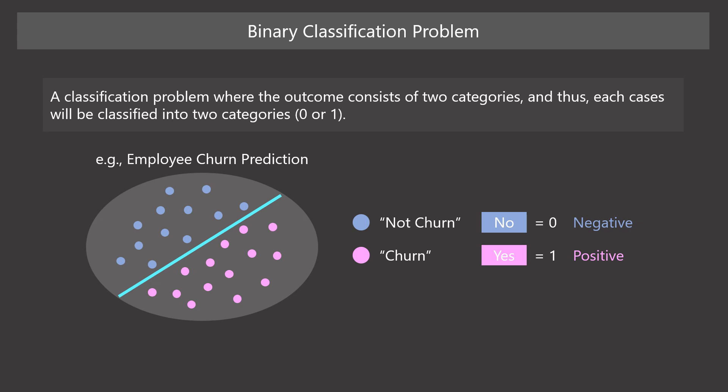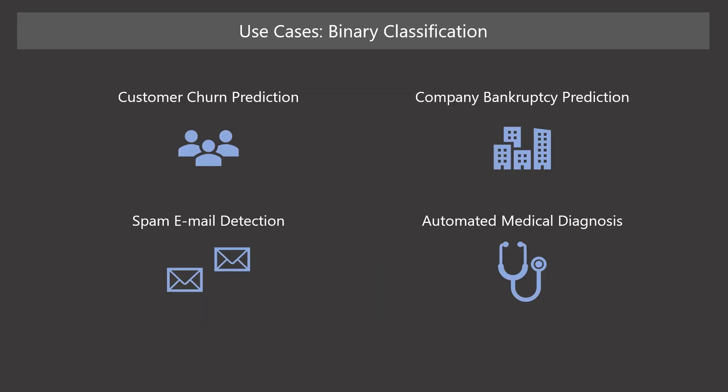For example, in employee churn prediction, positive means that an event of employee churn occurs. So positive cases are a churn, not a desirable event for the company.